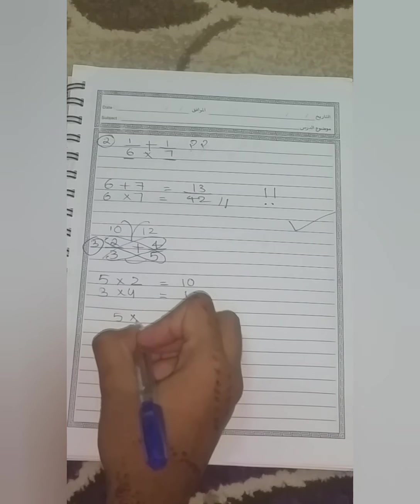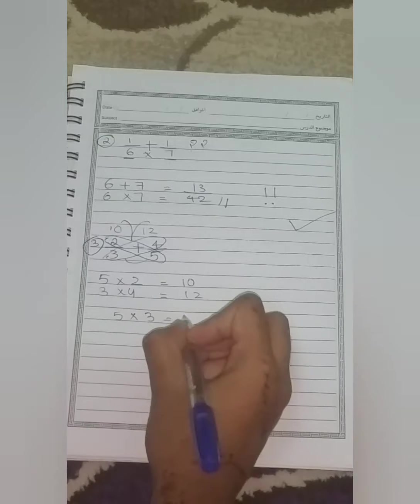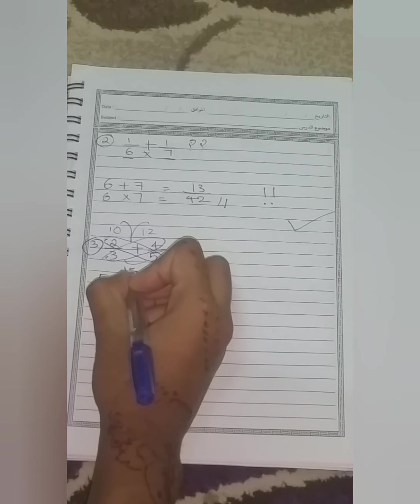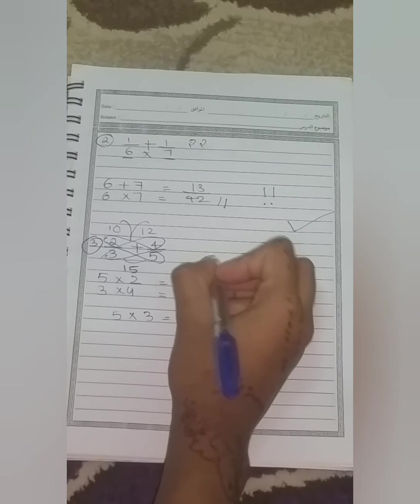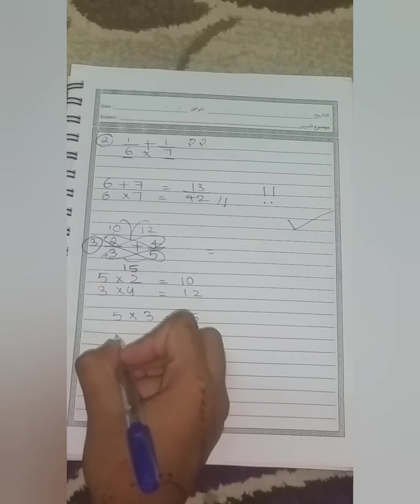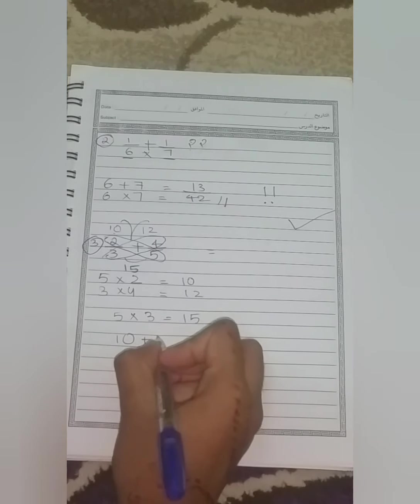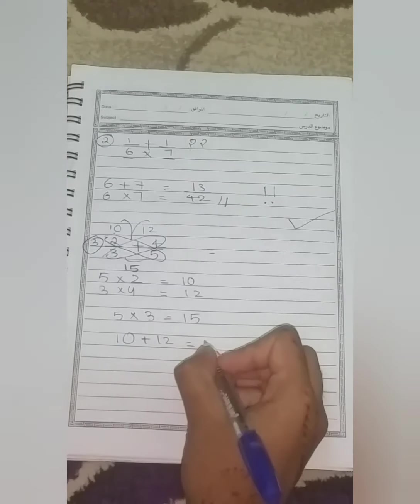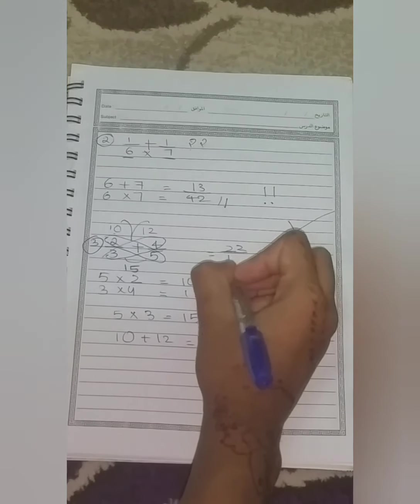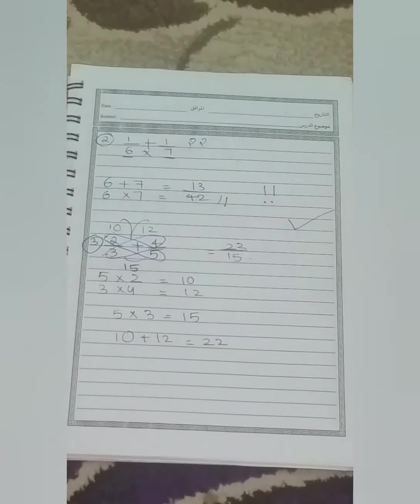Now we will add both the denominators together. So 5 into 3 is equal to 15. Next, what we should do is, we should add both the above numbers together, like here 10 plus 12, that is equal to 22, and so our numerator is 22 that we get, and the denominator is 15.